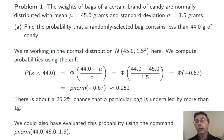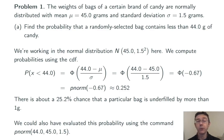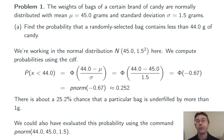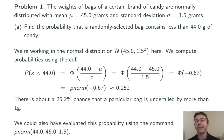By the way, if you're an R user, you could also have evaluated this probability using the command pnorm of 44, 45, 1.5 — so the x value, the mean, and the standard deviation are the three arguments there.